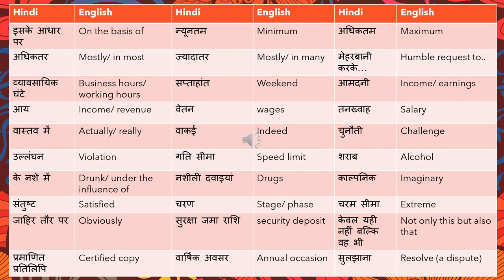Nashili dawai means drugs. Kalpanik means imaginary — aapka yah sandeha bilkul kalpanik hai means your doubt is completely imaginary. Santusht means satisfied. Charan means stage or phase — aapki bimari dusre charan mein hai means your illness is in the second stage. Charam seema means extreme. Zahir means obviously — yah toh zahir si baat hai means this is an obvious thing. Surakshah jamarashi means security deposit — you will encounter this in hotel dialogues or car loan contexts.